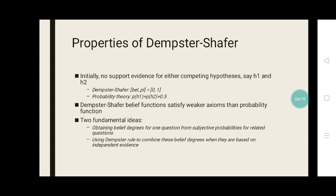Properties of Dempster Shafer: Initially, no support evidence for either competing hypotheses, say H1 and H2. Dempster Shafer belief functions satisfy weaker axioms than probability functions. Two fundamental ideas: obtaining belief degrees for one question from subjective probabilities for related questions, and using Dempster's rule to combine these belief degrees when they are based on independent evidence.